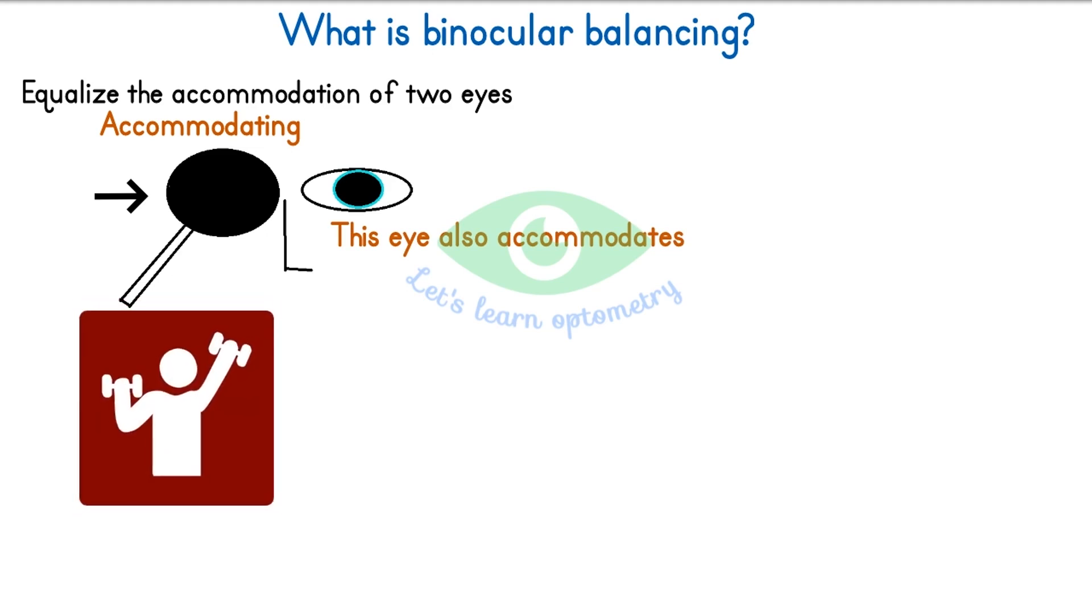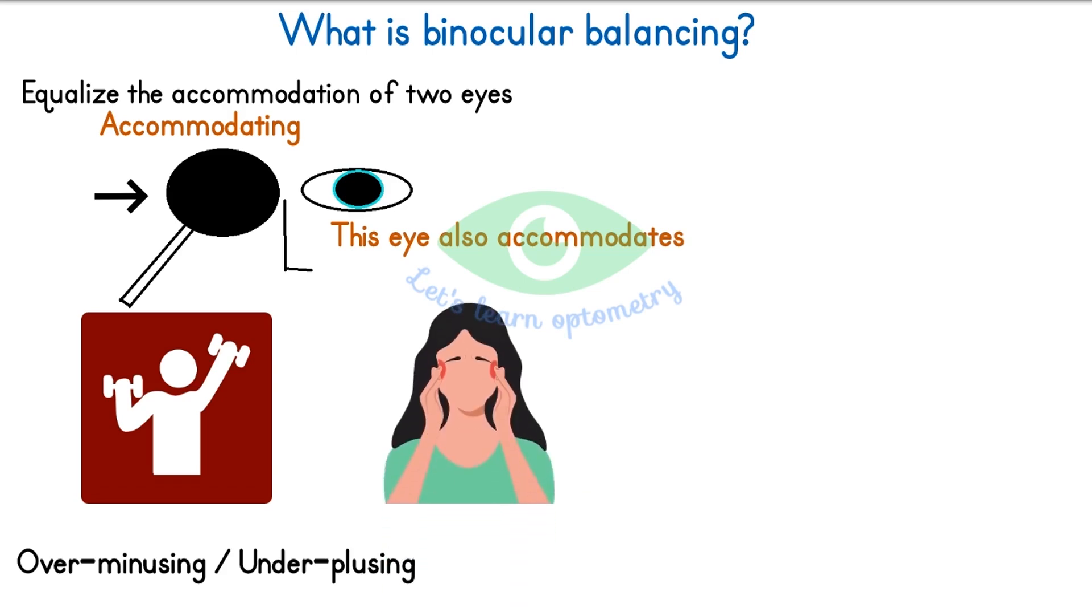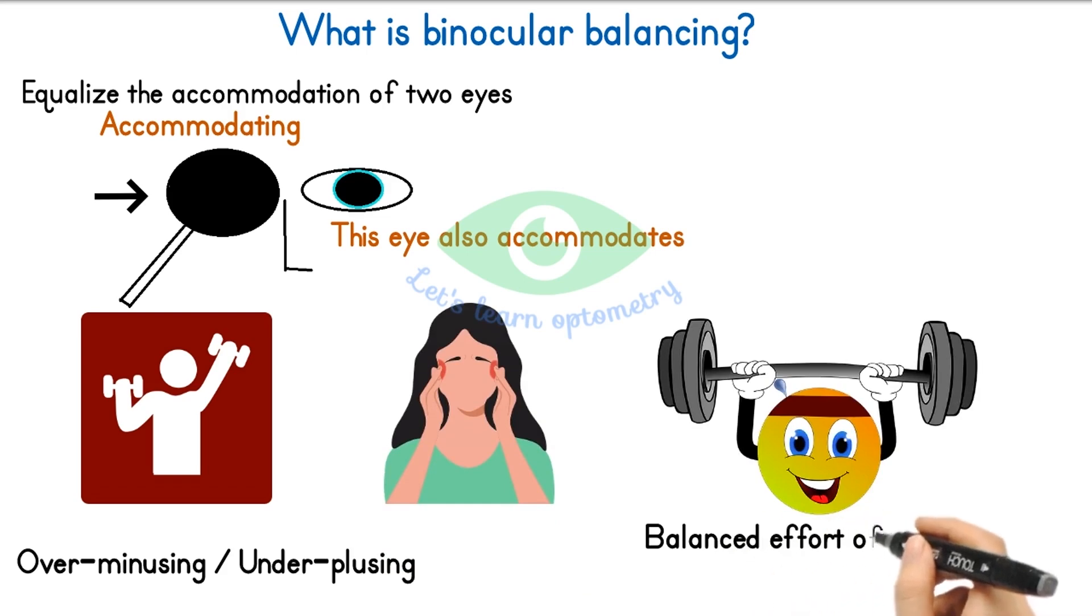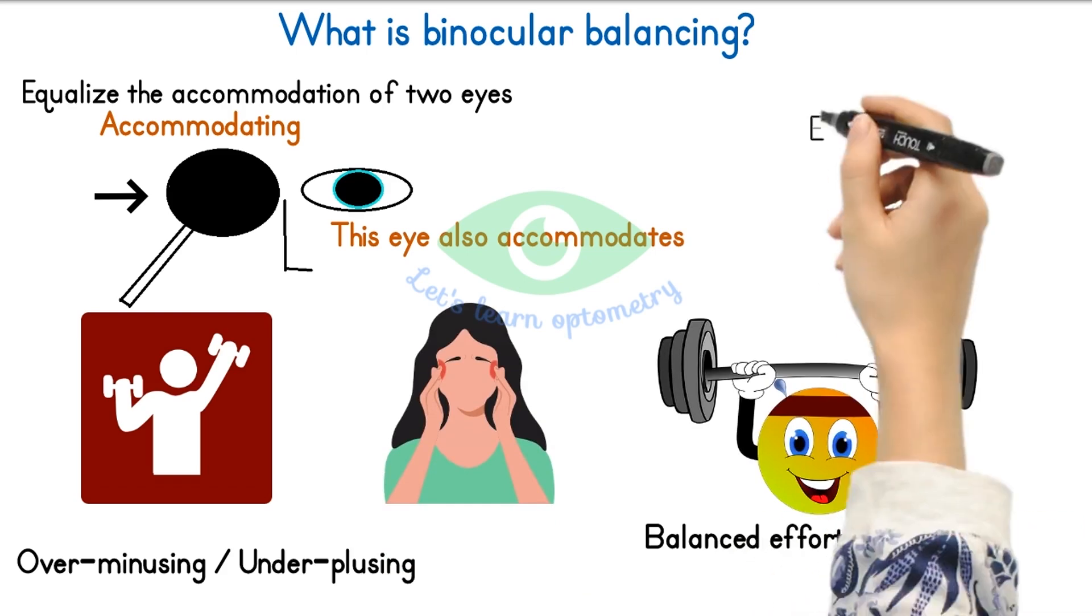Unequal accommodative effort from the eyes may lead to over-minusing or under-plussing the patient, which may end up in asthenopia. In this test, we are balancing the accommodation of two eyes. This test is otherwise called the equalization test.